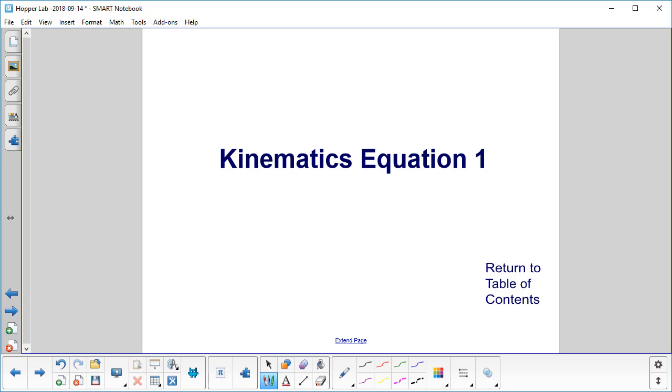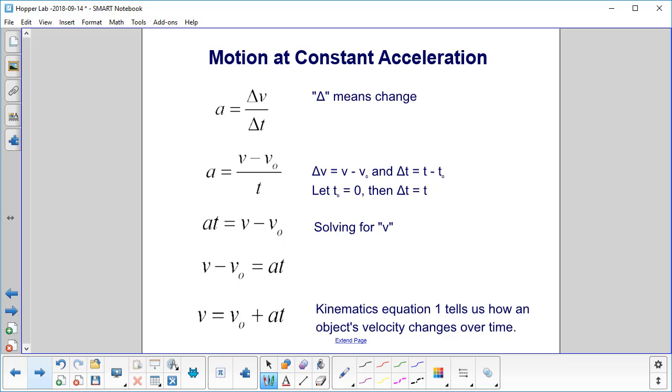Kinematics equation 1. Here's how we derive kinematics equation 1. We start with the definition of acceleration, which is delta v over delta t, where delta means change.